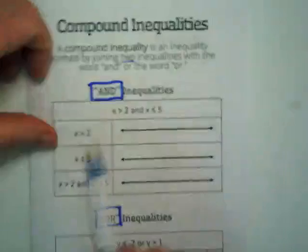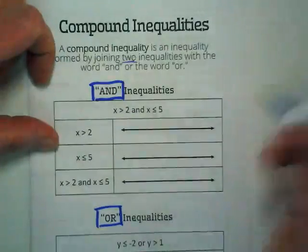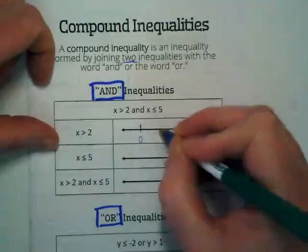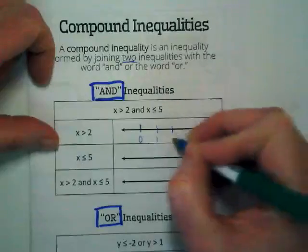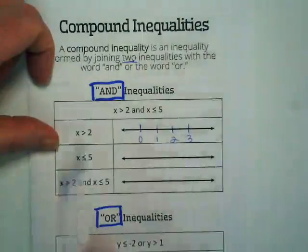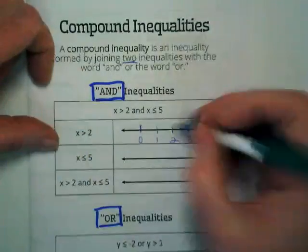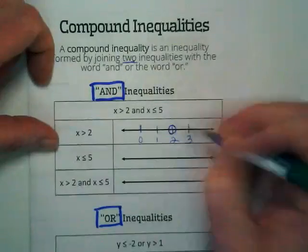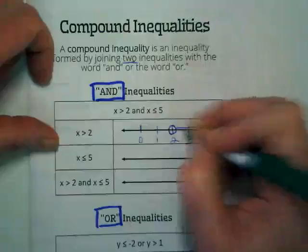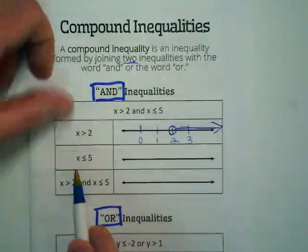So pick up your pencil and we are going to first graph x is greater than 2 to see an and inequality in action. As always we're just going to do a real quick snapshot of a graph. Let's graph x is greater than 2. So what number are we circling? Two. And the arrow is going to go to the right. That's one inequality.